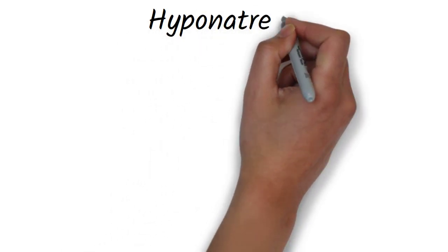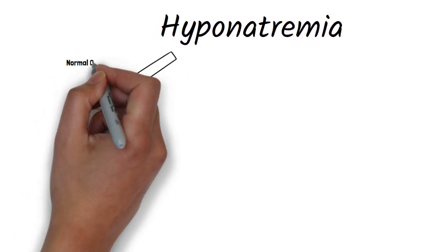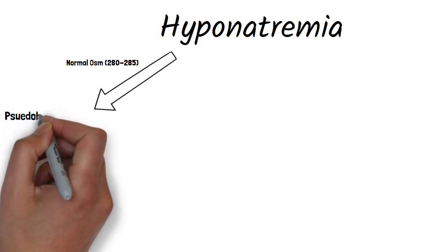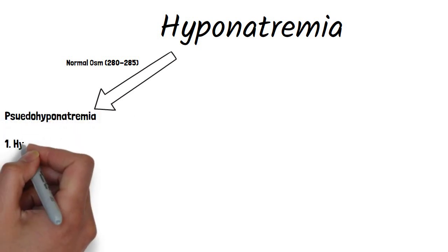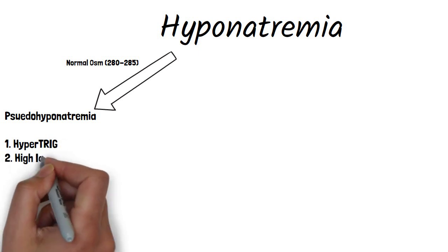When approaching hyponatremia, we have to split it three ways and we'll start with the first one. You can have an instance where even though the sodium is low, the osmolarity is still normal. This happens in two instances and it's labeled pseudohyponatremia, when you have too many hypertriglycerides or immunoglobulins floating in the plasma.